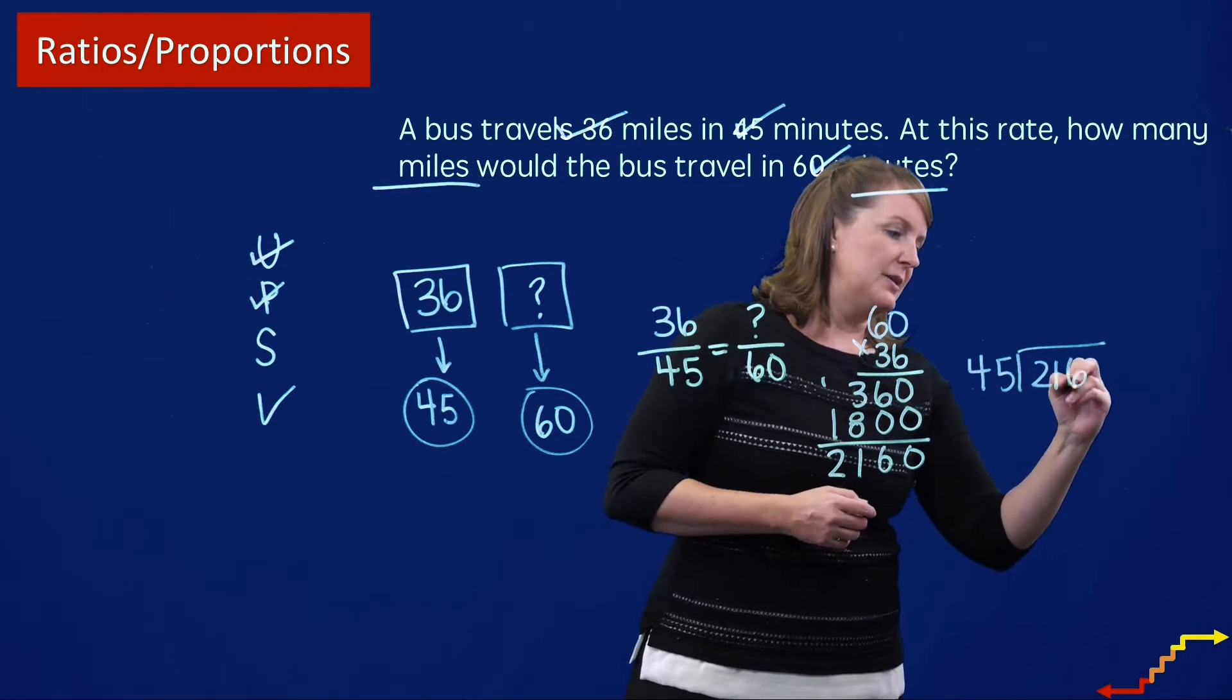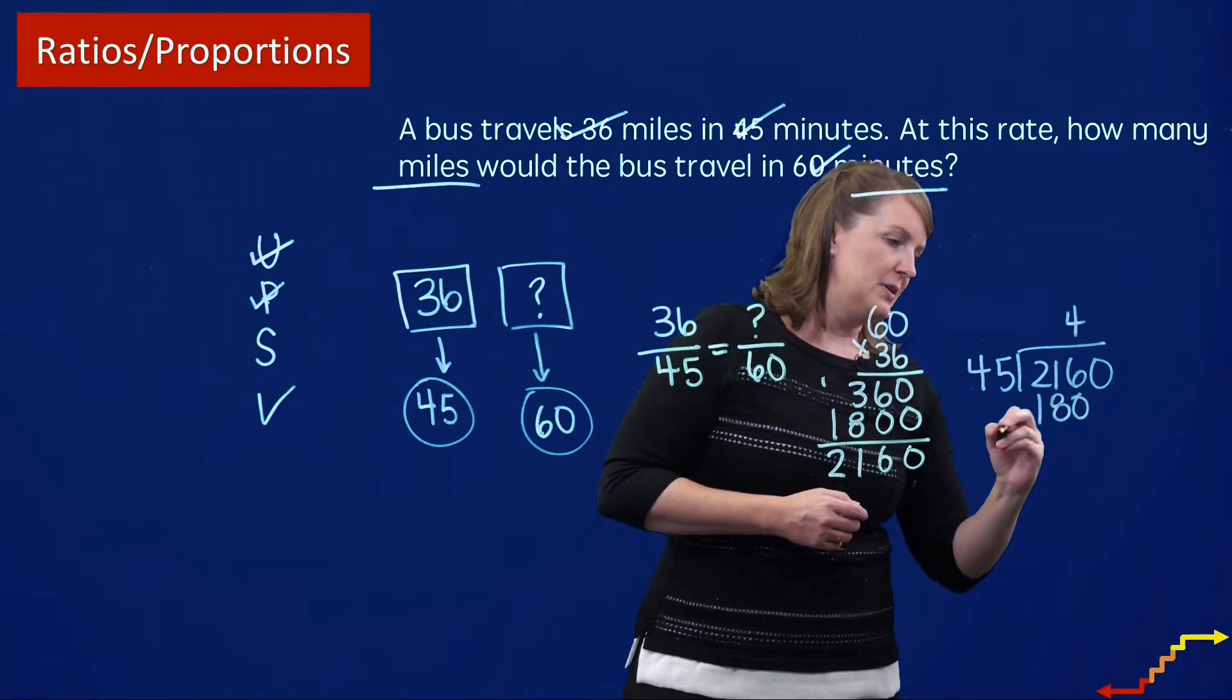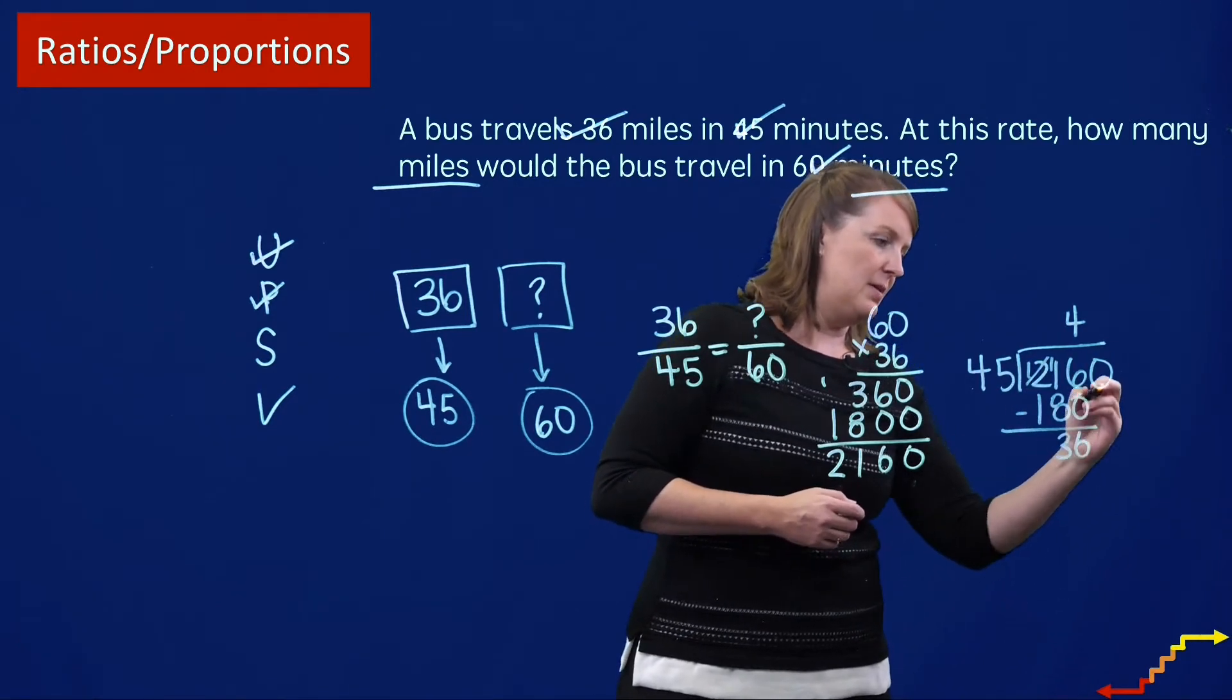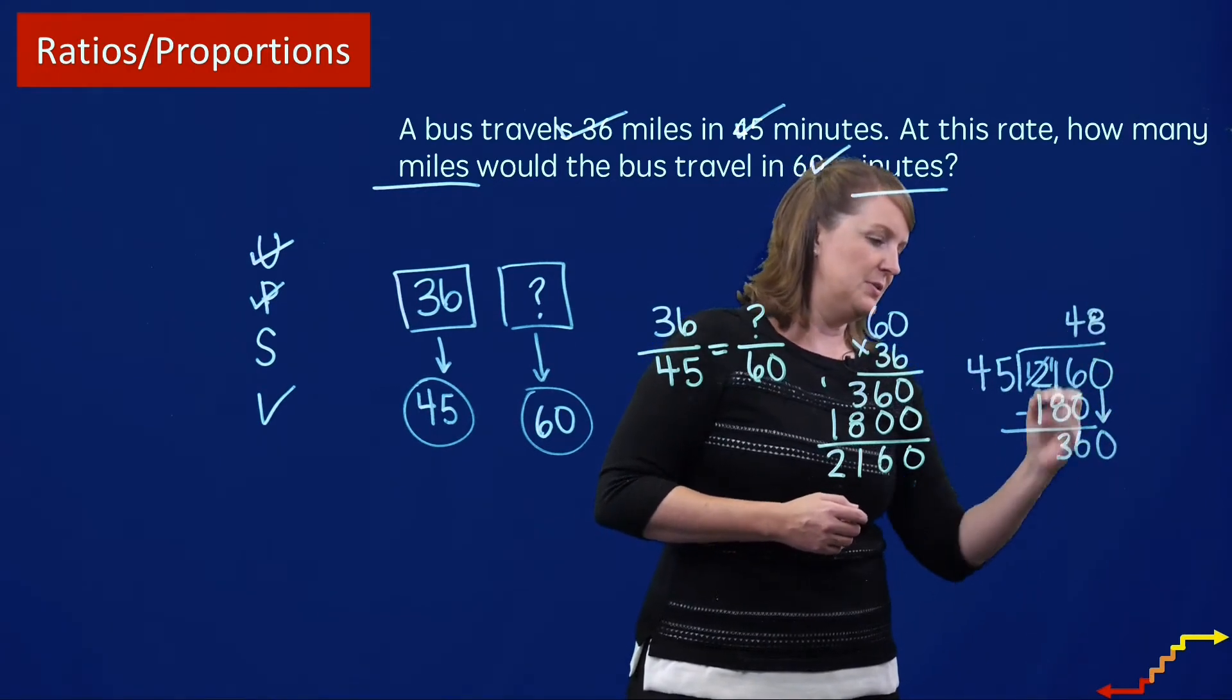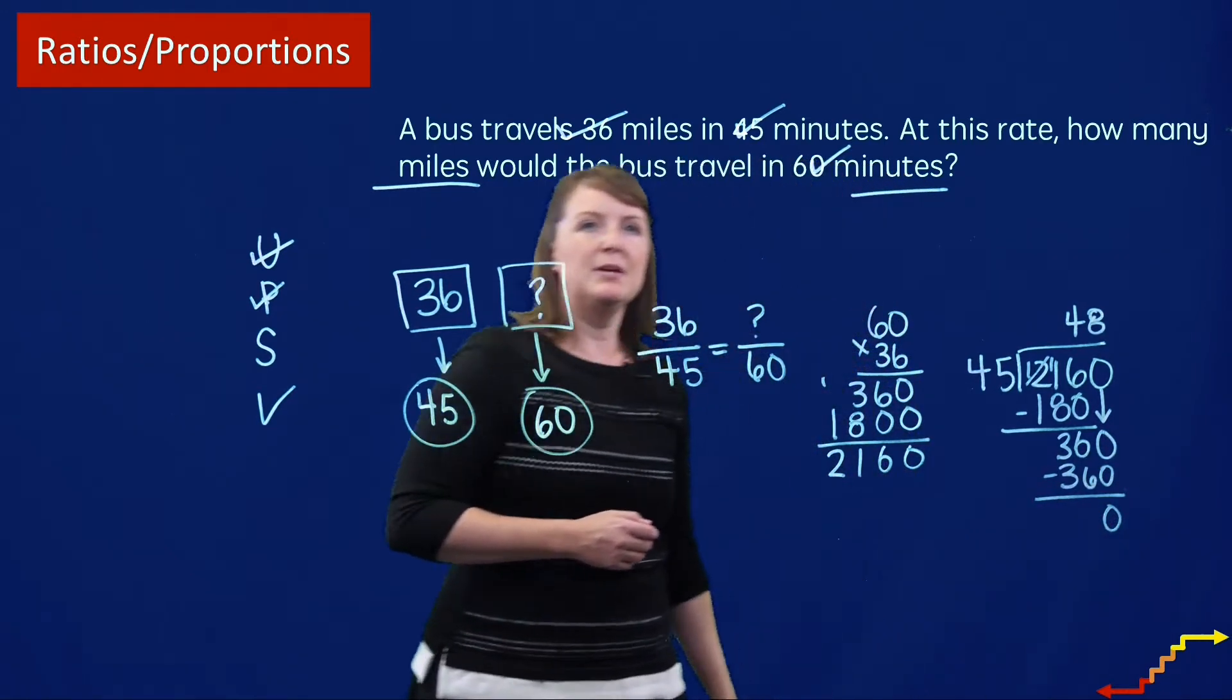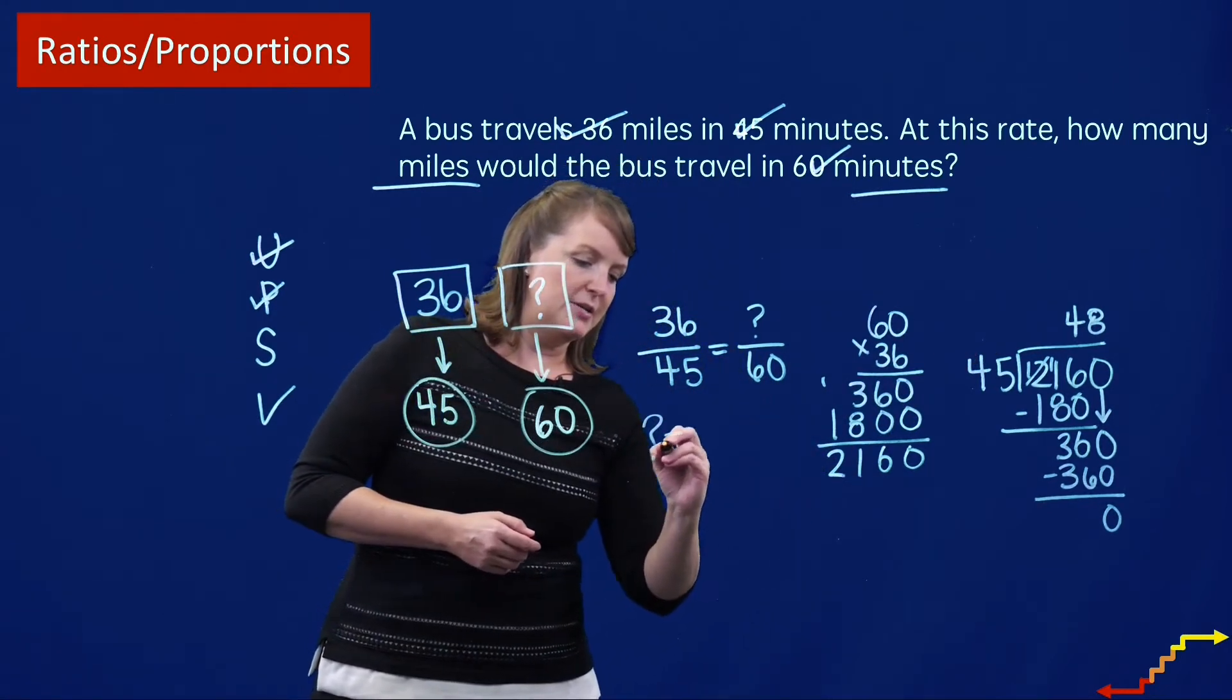And then I'm going to divide that by 45. So I can make four groups of 45 first, and I'm going to subtract there. And then I bring down my zero, and I can then make eight groups of 45. Eight times 45 is 360. That leaves me with a remainder of zero.